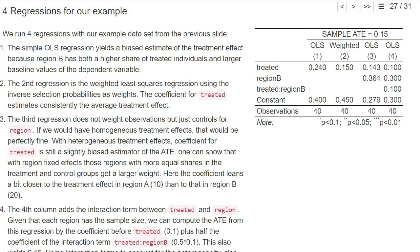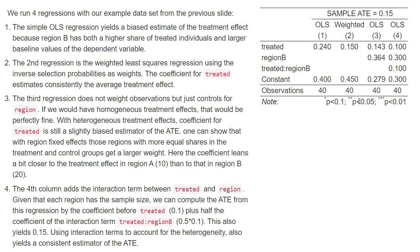So using inverse probability weighting gives us the exact average treatment effect, while controlling for region fixed effects removes most of the bias but doesn't give exactly the average treatment effect — a result that even economists 20 years ago may not have been aware of. That said, you don't have to use weighted regression to compute the average treatment effect; you could also add interaction terms, as discussed in chapter three for dealing with heterogeneity.